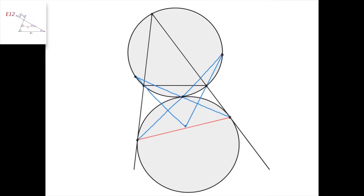Indeed, consider a homothety centered here that transforms this circle into this circle. Then this point would go to this point, and this line would go to a parallel line right here that touches the image circle at this point. But a parallel line to this one touches this circumcircle at this point, which means that this arc must equal this arc. So this point is the midpoint of this arc. Analogously, if we connect this tangency point and this tangency point and intersect with the circumcircle, it would go exactly here at the midpoint of that arc.